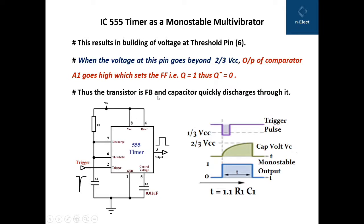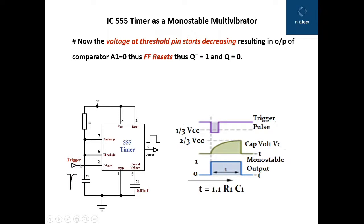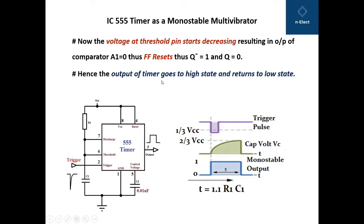The transistor is forward biased. Since Q equals 1, the transistor is forward biased and the capacitor quickly discharges through the transistor. The voltage at the threshold pin starts decreasing. The capacitor starts discharging through the discharge pin. When the capacitor is discharging, the voltage at pin number 6 goes down, which results in the output of comparator A1 — the upper comparator — going to 0. Thus the flip-flop resets, and since the flip-flop resets, Q-bar again becomes equal to 1 and Q becomes 0. Hence the output of the timer goes to high state and returns to low state back.